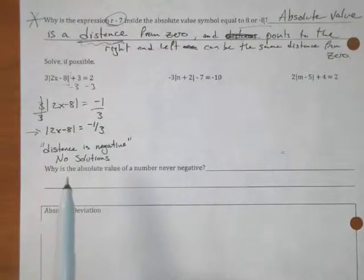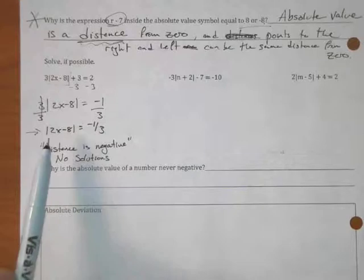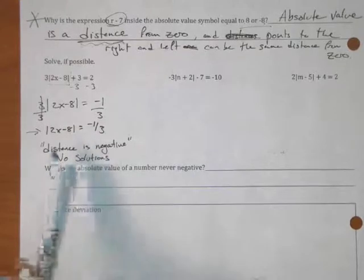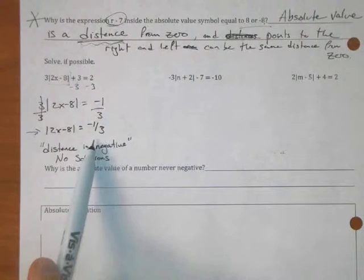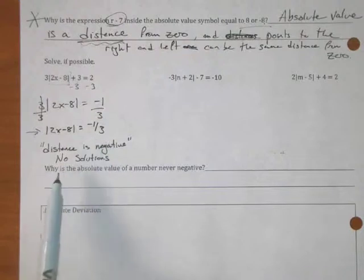We always measure distance as positive numbers. Since this thing is saying that this distance, whatever it is, is a negative number, then that's a problem and we have no solutions.